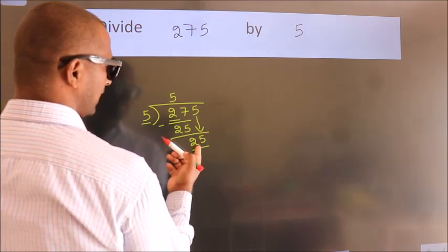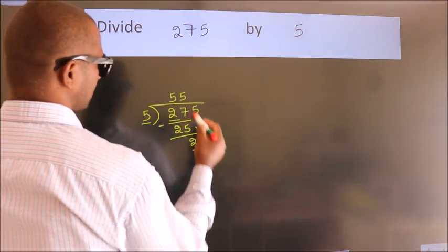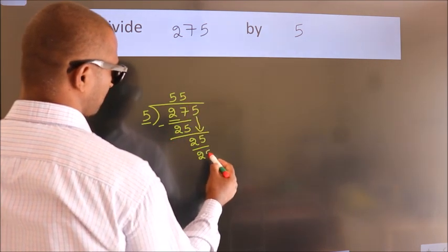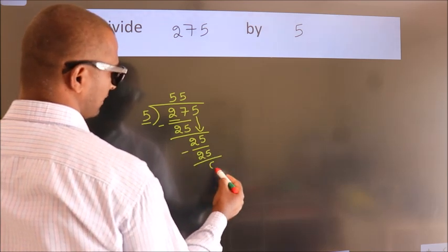When do we get 25 in the 5 table? 5 5s equals 25. Now we subtract and get 0.